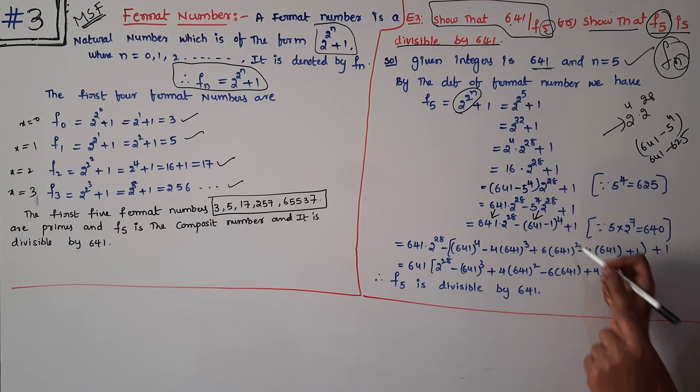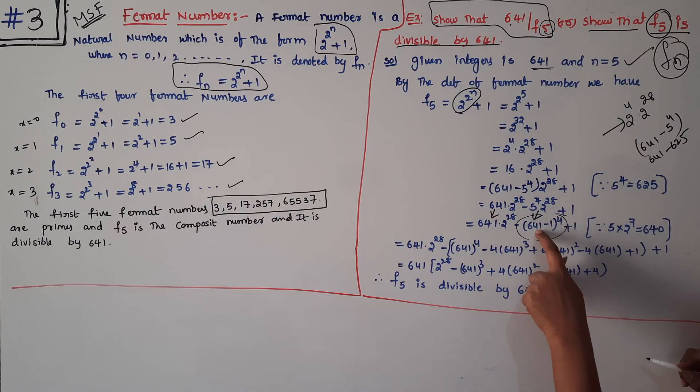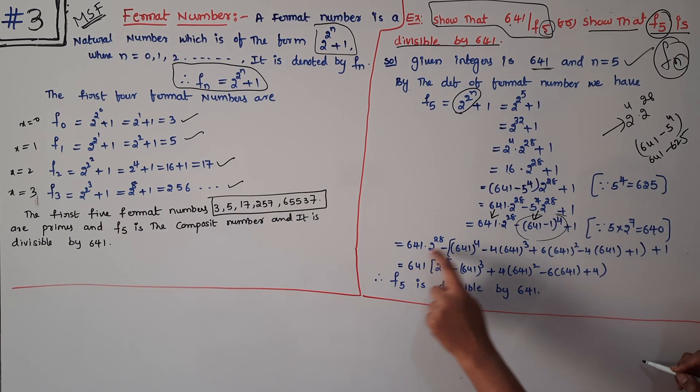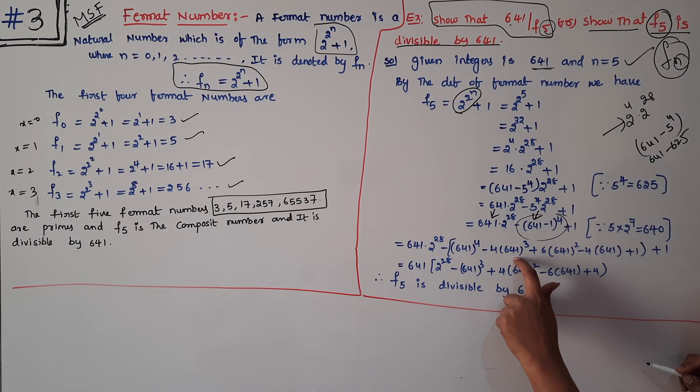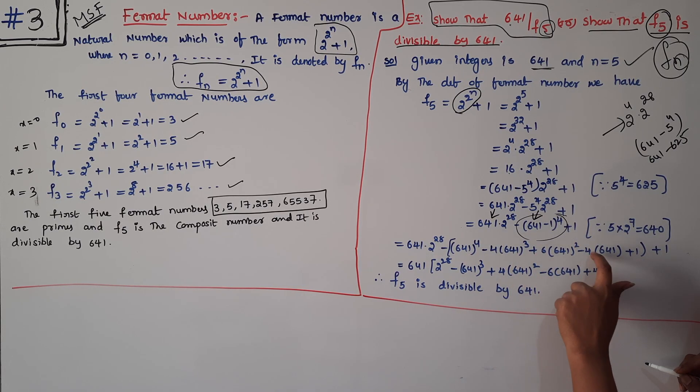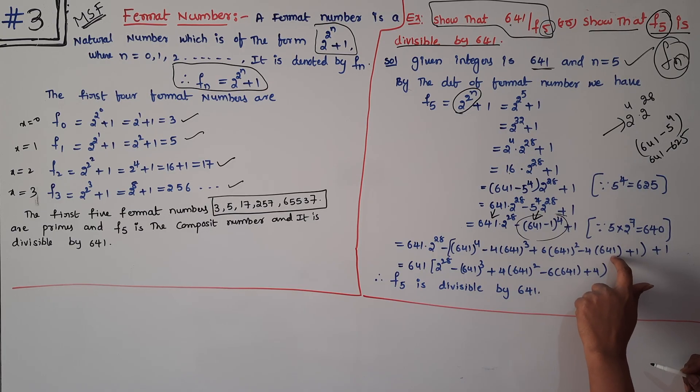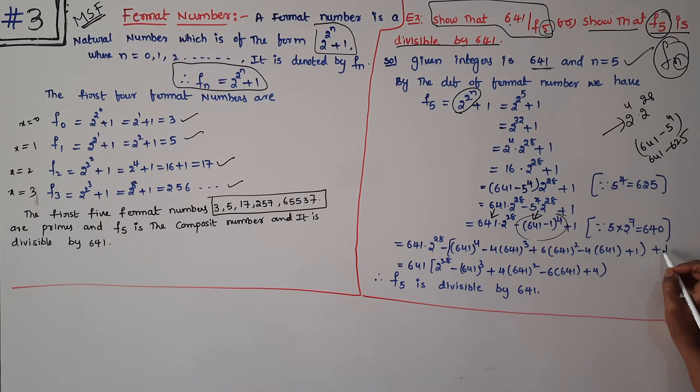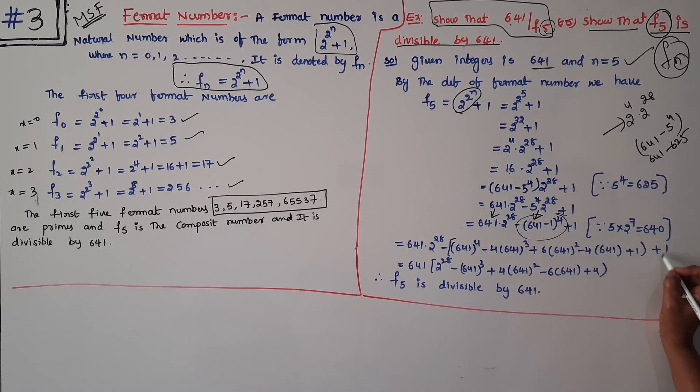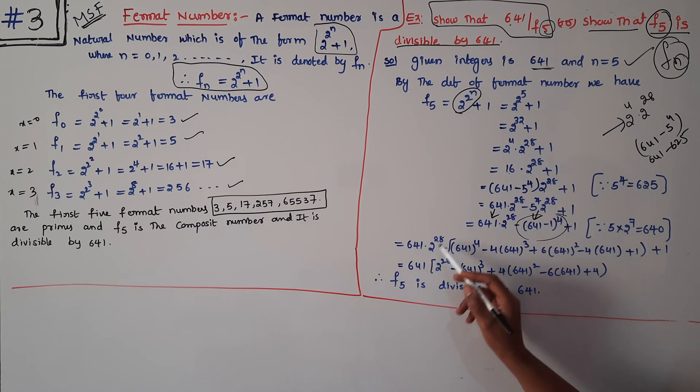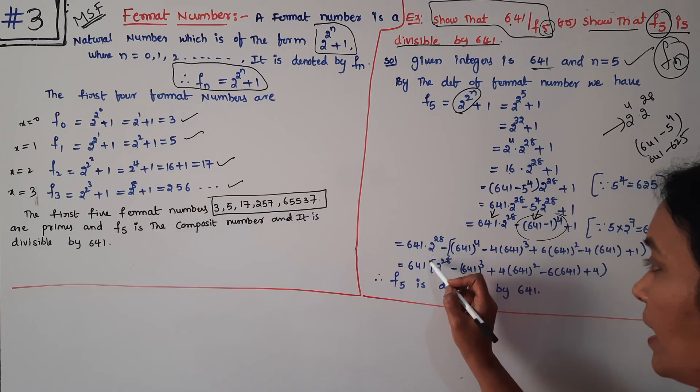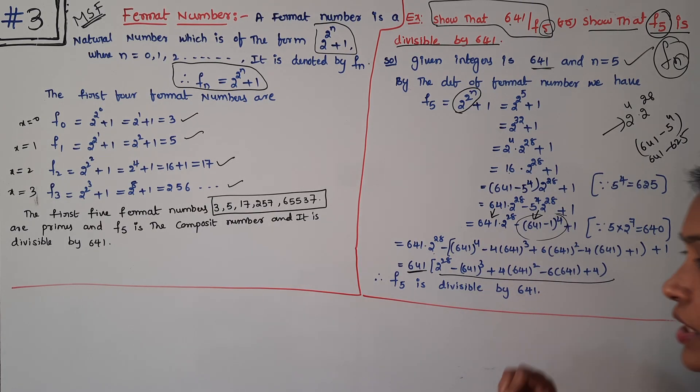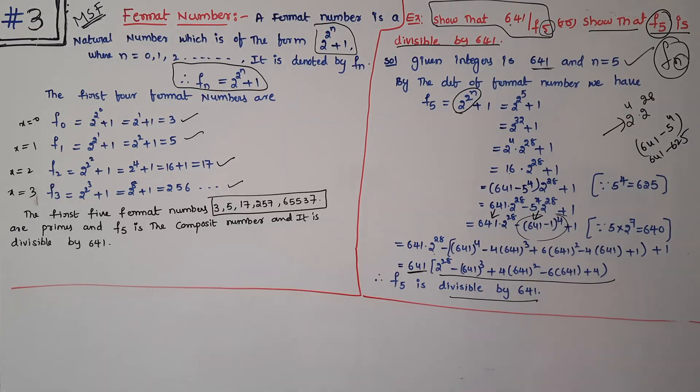Now I will use the binomial expansion: (a - b)^4 = a^4 - 4a^3b + 6a^2b^2 - 4ab^3 + b^4. I will say this plus 1. After simplification, each and every term indicates it's in terms of 641, and indirectly, this shows 641 is divisible by F_5.